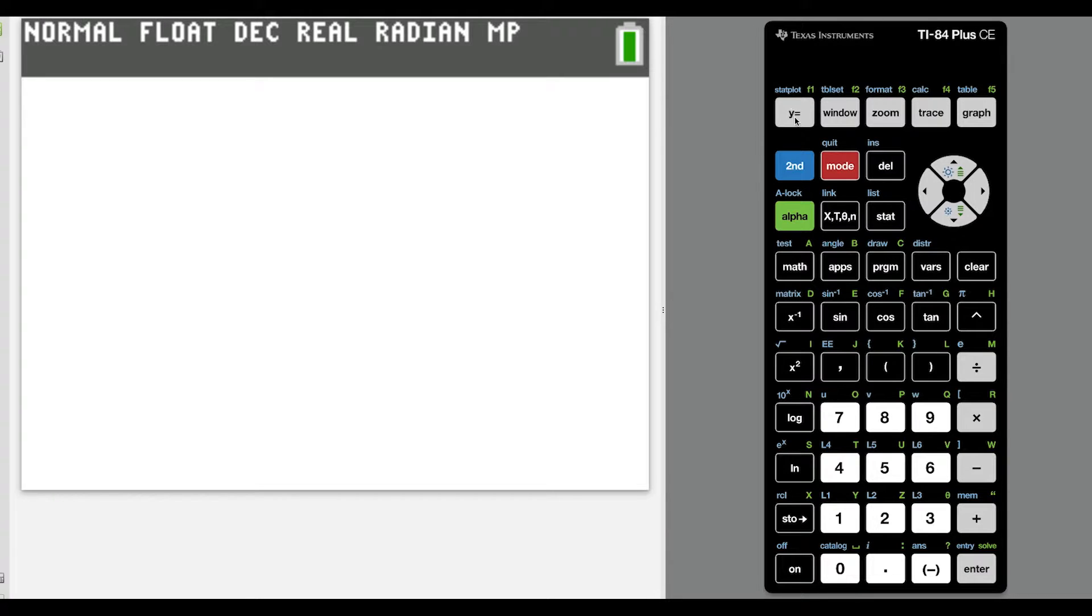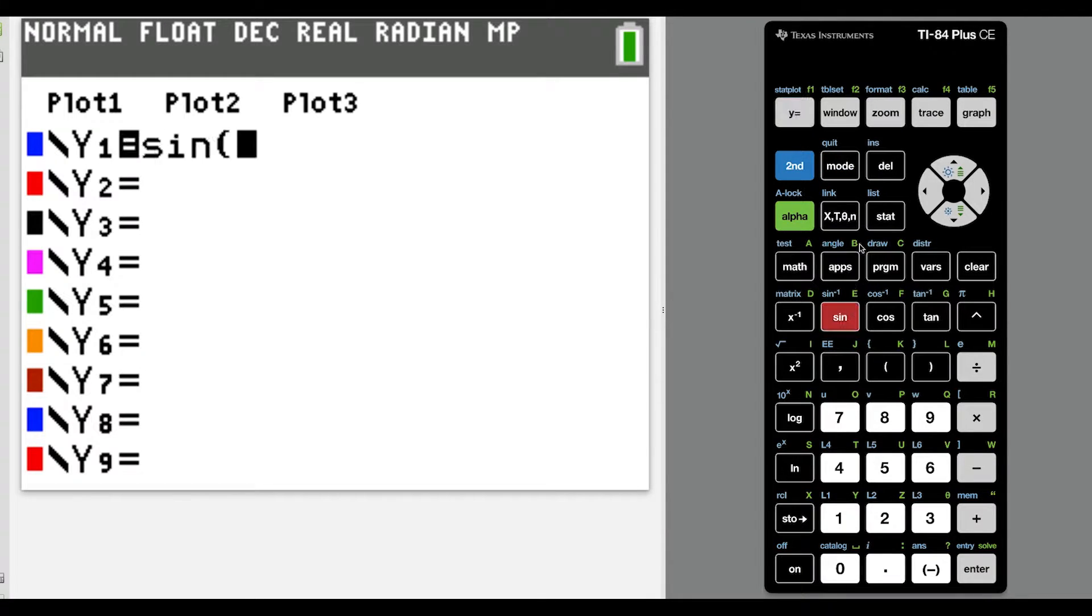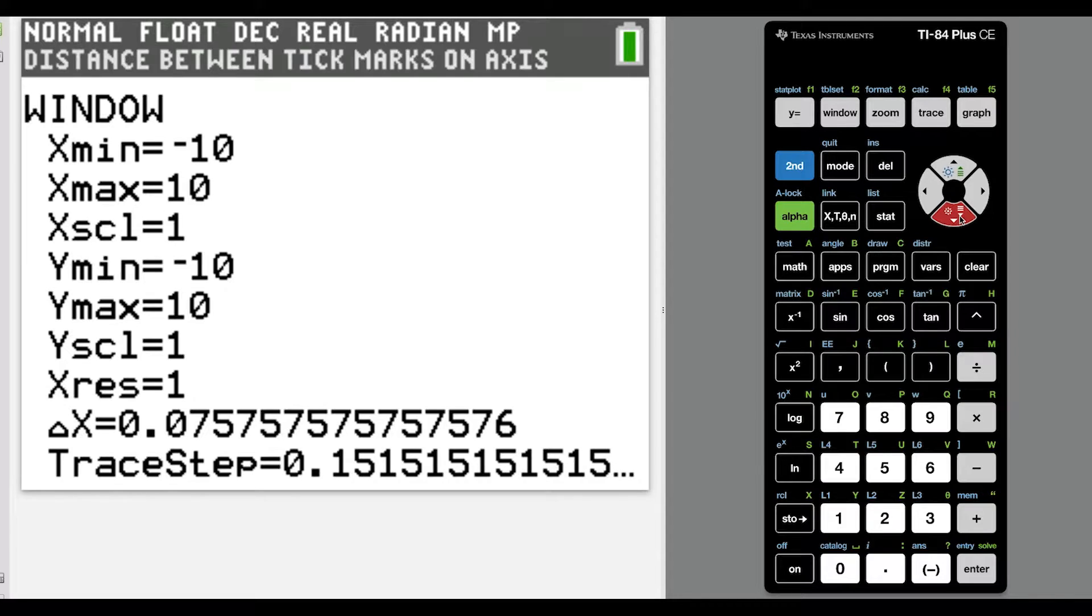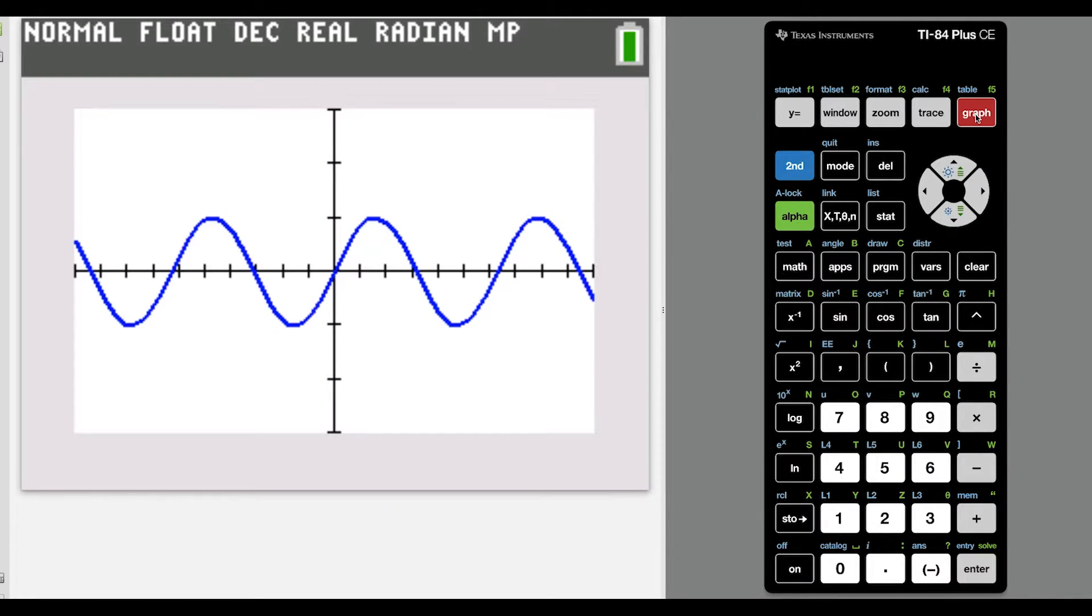The function that we're going to use to explain this concept is sine x. So we're going to start with just a graph of sine x, and I'm going to adjust the window to get rid of the excess space above and below. So instead of going from negative 10 to 10 in the y direction, we'll go from negative 3 to 3 so we get a better picture of our function. So here's sine of x.